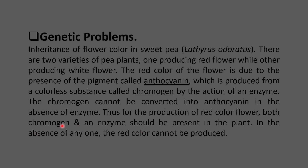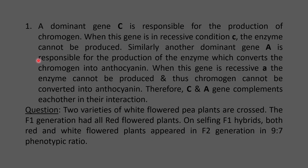In the absence of either chromogen or the enzyme, the red color cannot be produced. A dominant gene C is responsible for the production of chromogen; when this gene is in recessive condition, chromogen cannot be produced. Similarly, another dominant gene A is responsible for the production of the enzyme which converts chromogen into anthocyanine. When gene A is recessive, the enzyme cannot be produced and chromogen cannot be converted into anthocyanine. Therefore, dominant genes A and C complement each other in this interaction.